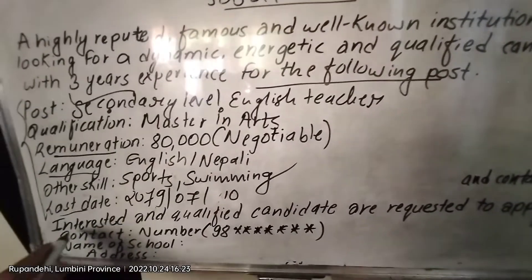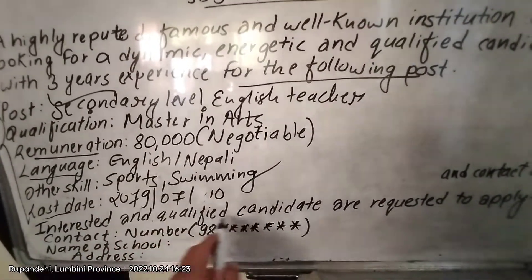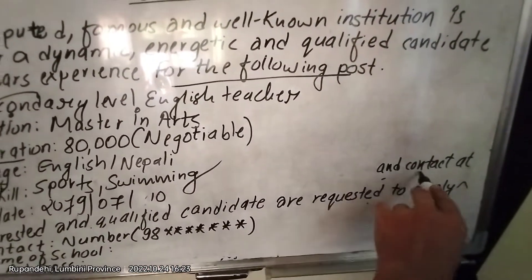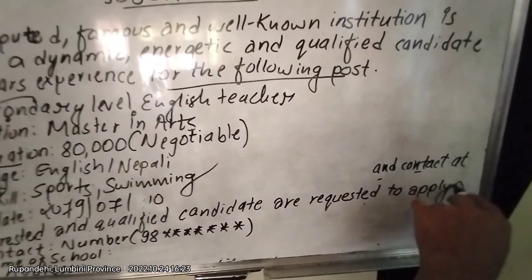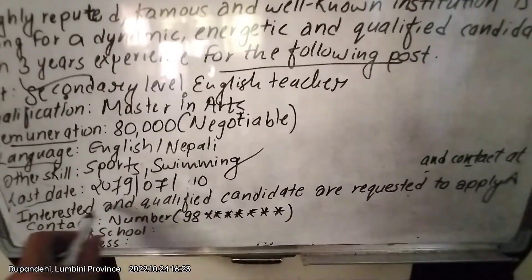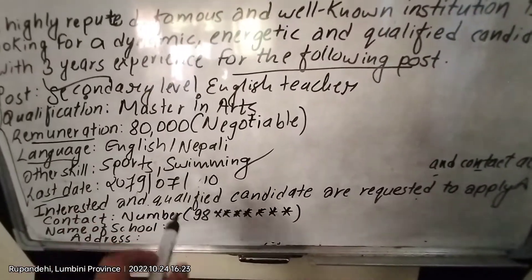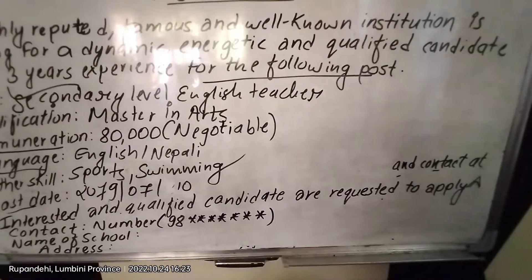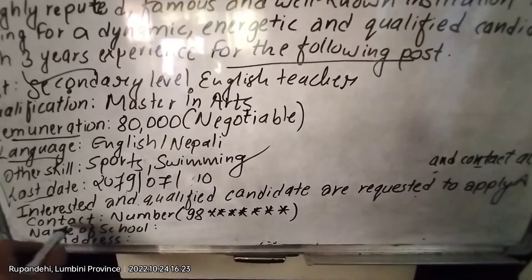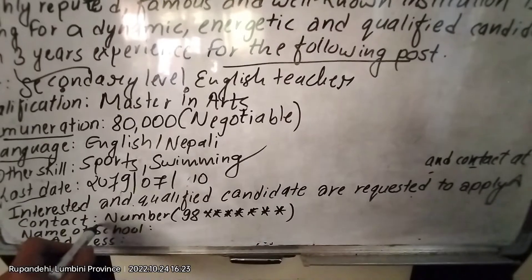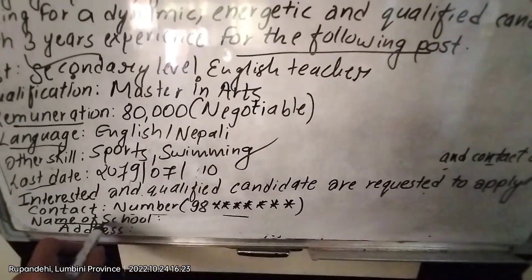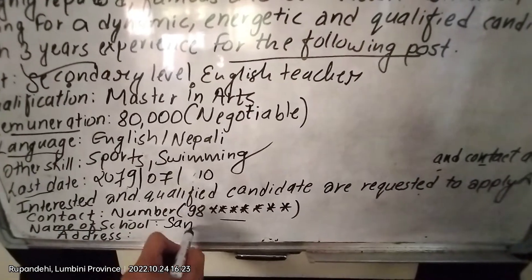At last, after this, you have to write: 'Interested and qualified candidates are requested to apply and contact at' — and here you write the contact number of the institution, the name of the school, which means Santhi School.